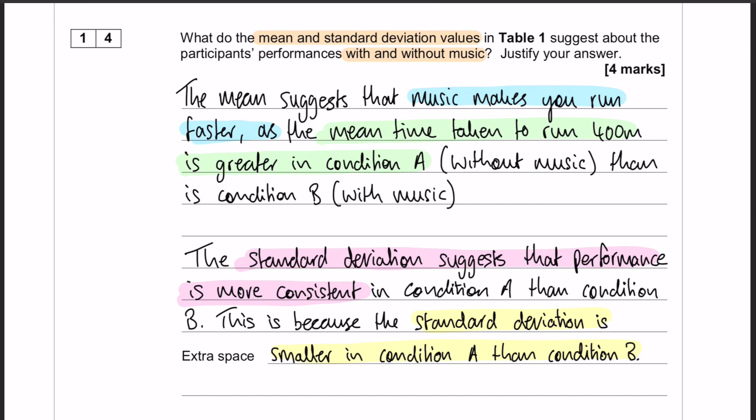And then the third and fourth mark comes from talking about the standard deviation, and it's the same sort of deal. The standard deviation suggests that performance is more consistent in condition A, and the reason we're saying that is because the standard deviation is smaller in condition A than it is in condition B.